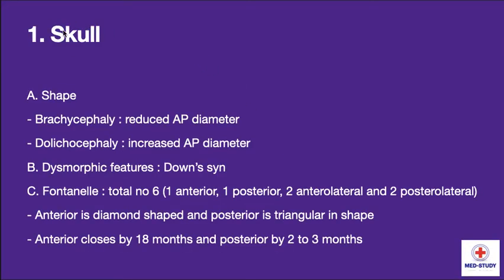Now coming to head-to-toe examination. First, the skull — we have to know the shape. Brachycephaly is when there is a reduced AP diameter, and dolichocephaly when there is increased AP diameter. Dysmorphic features in the skull are seen in Down syndrome. There are a total of 6 fontanels: 1 anterior, 1 posterior, 2 anterolateral, and 2 posterolateral. The anterior fontanel is diamond-shaped and the posterior fontanel is triangular in shape.